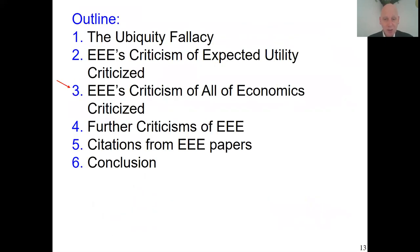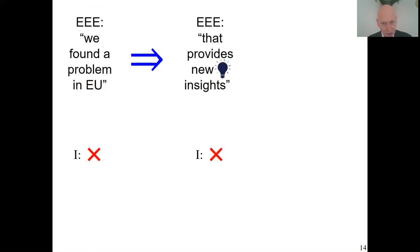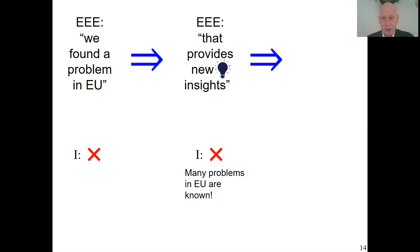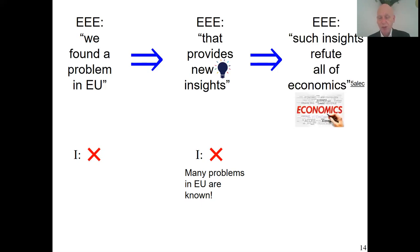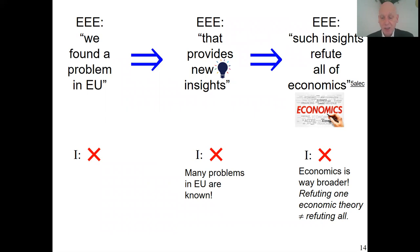Now I go to Ergodic Economics' criticism of the entire economic field. EE claims they found a problem in expected utility — let's grant them that. They say it is a new insight — many of these problems have been known before, but let's grant that too. Now comes a third step, even more implausible: on the basis of only that, they claim they have refuted all of economics. I disagree strongly. Part of the claim is that all of economics rests on expected utility — not true. Like physics, economics is a very broad field with many things happening that have nothing to do with expected utility. In general, if you think you refuted one economic model, you cannot claim you refuted them all.